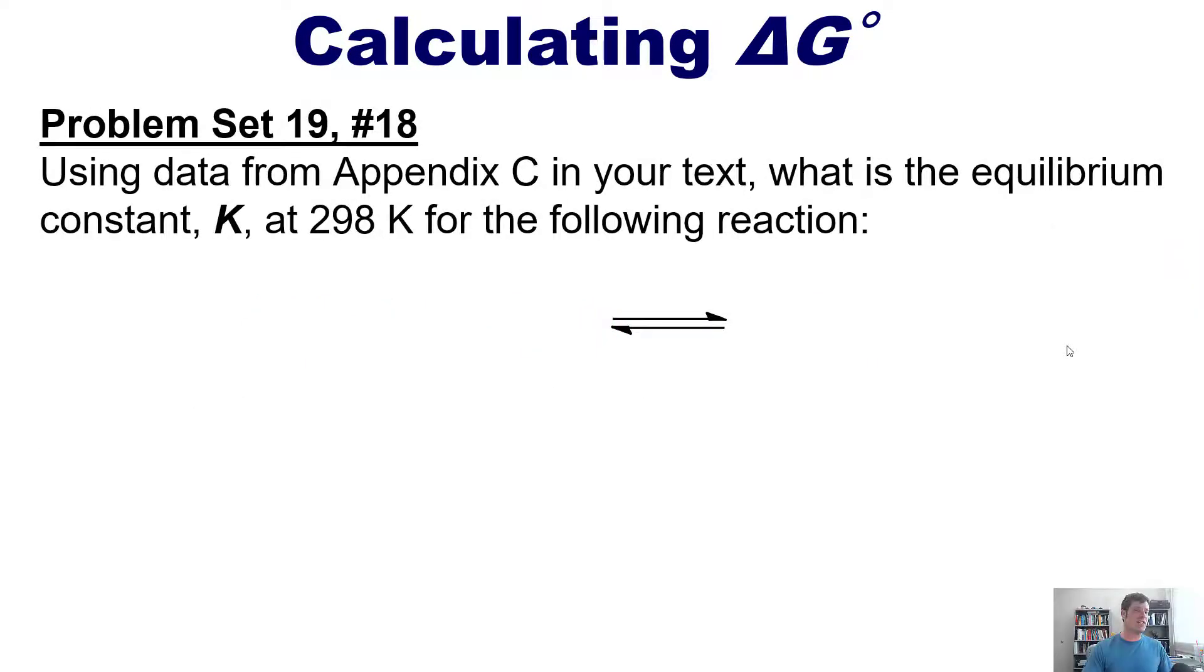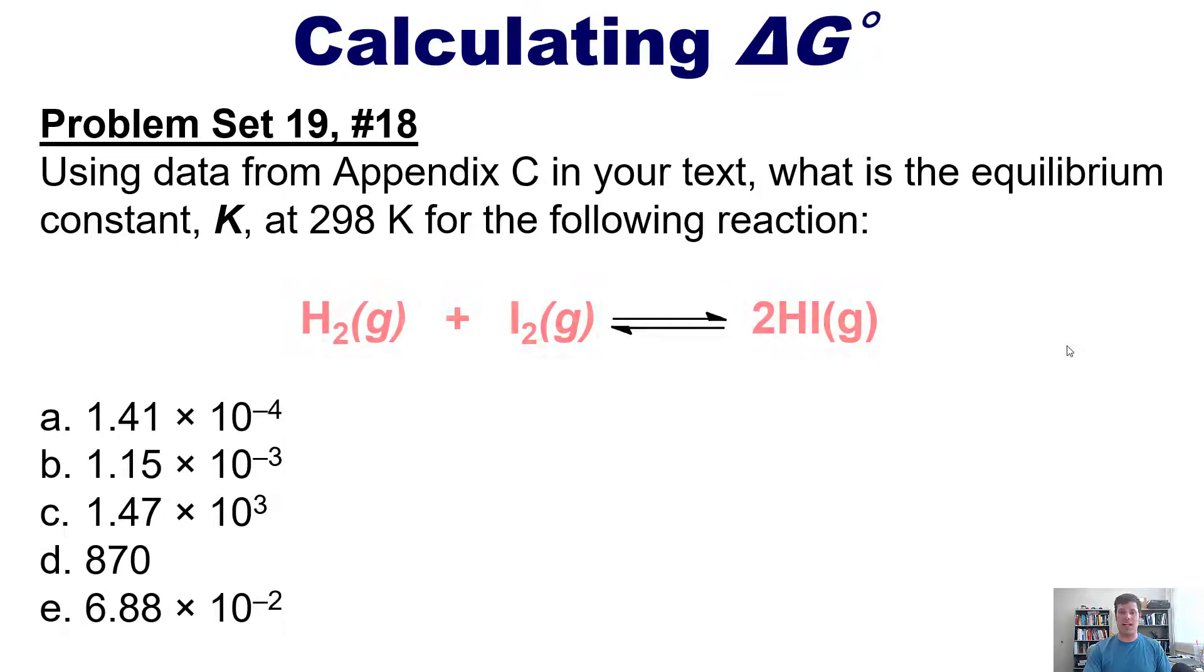And last, using data from appendix C in our text, what is the equilibrium constant K at 298 for the reaction shown here? Again, I'll post a link somewhere over my head or in the description below to a video in which I show you how to do this problem.